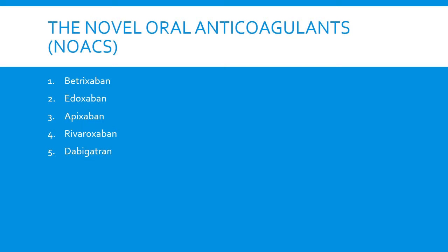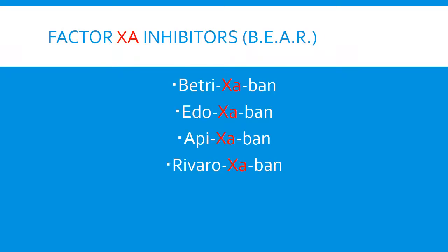Just a few tips to help you remember which class they are in. The first four are factor XA inhibitors. You can see the acronym for the four spells BEAR — B is for betrixaban, E is for edoxaban, and so on. The creators of these drugs help us remember by putting the XA in, which is 10A. So when you see the drugs ending in -xaban, with the XA in there, they are factor 10A inhibitors. Easy to remember.